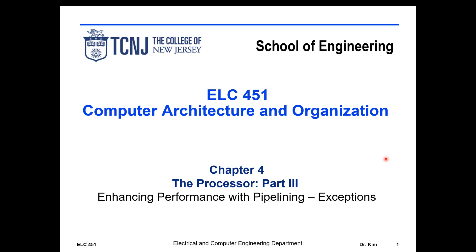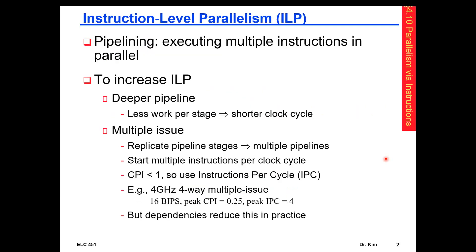Today we're going to finish chapter four and talk about the next set of more advanced techniques in enhancing performance, building on what we've already covered. The broader topic is called instruction level parallelism, which is about how we execute more than one instruction — or achieve a completion rate of more than one instruction per clock cycle. Superscalar is actually one way of implementing instruction level parallelism.